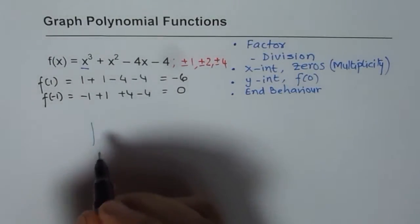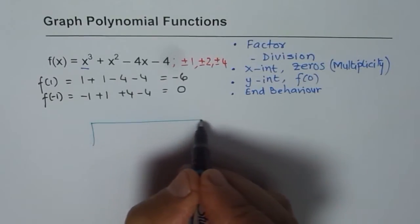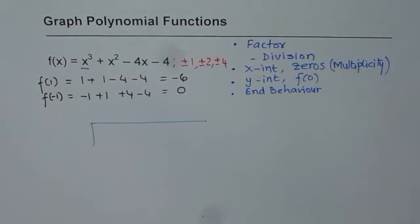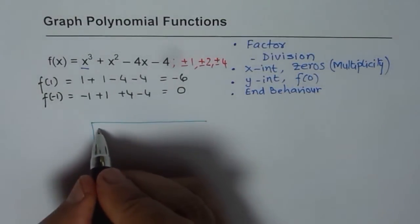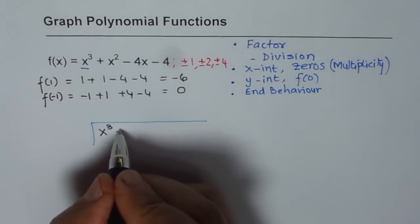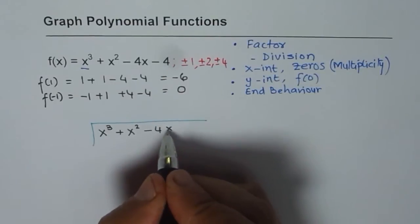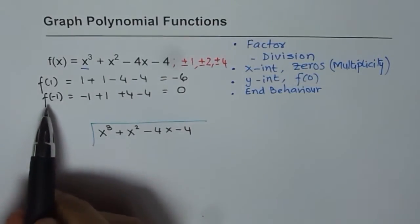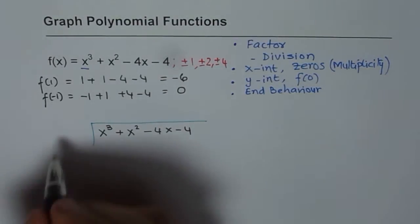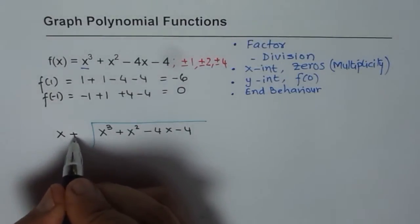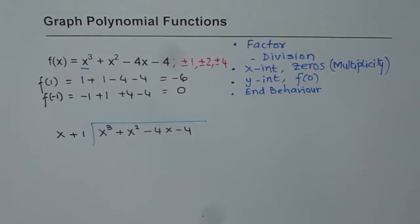So we will adopt long division. You can also do synthetic division at this stage. We will perform long division as most of you are conversant with it. x³ + x² - 4x - 4. Since we have a factor at minus 1, we are going to divide by x + 1. If I put minus 1 I get a 0 here. That is how this factor becomes 0.